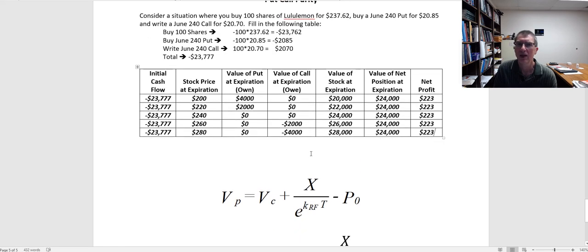And what we get is the price of the stock plus the value of the put minus the value of the call equals the present value of the exercise price.